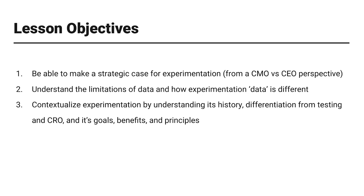The objectives here: first, you need to be able to make a strategic case for experimentation — from the practitioner as well as the resourcer standpoint, from the CMO versus the CEO perspective. Second, understand the limitations of data and how experimentation data is different. And third, contextualize experimentation by understanding a bit of its history, especially the randomized control trial, differentiation from testing and CRO, and some frameworks around goals, benefits, and principles of experimentation.